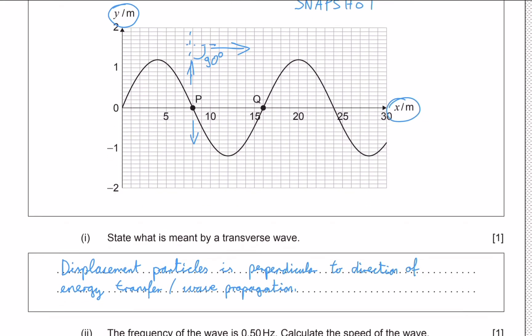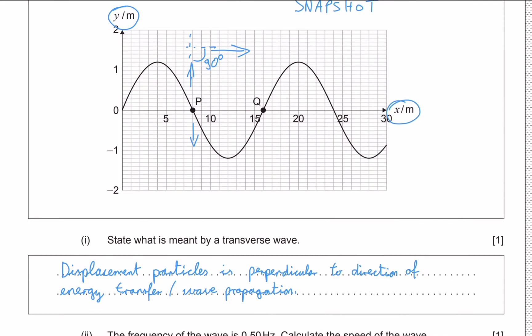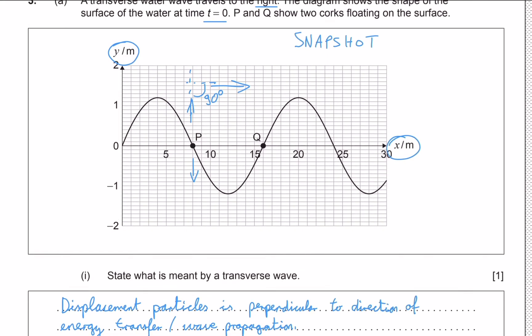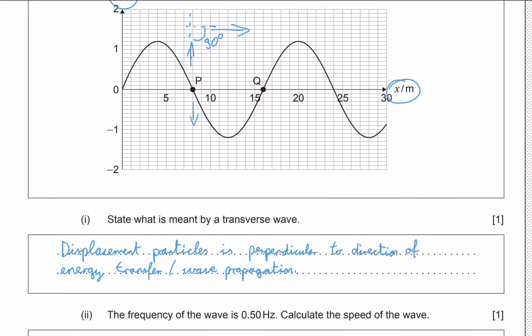A longitudinal wave is the other type of wave we could be asked about. In a longitudinal wave, the particles move left and right — in the same direction the wave travels. So the angle between particle motion and wave direction is 0 or 180 degrees, meaning they are in the same direction.